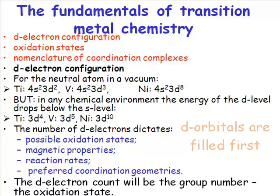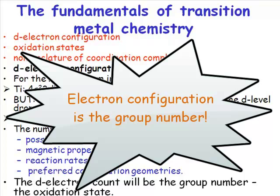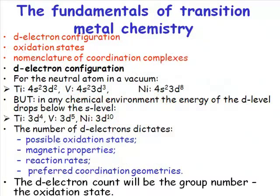It's really useful because it means that the electron configuration is reduced to simply the group number. So, if you want to know how many d-electrons your atom has in a chemical environment, then you simply take the group number. So,